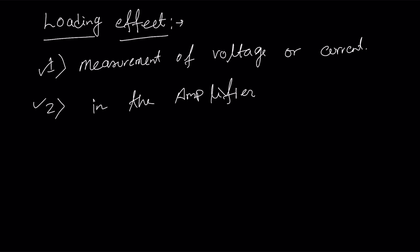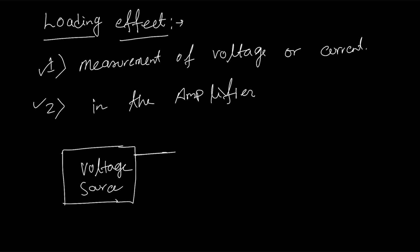I will show you the problem in each topic. The loading effect means whenever you connect a load in a particular circuit, at that time the circuit parameters like voltage or current will change. Suppose you have a practical voltage source with a positive terminal and a ground terminal, and you put the load here. When you connect the load, the voltage or current parameters will change. That's why we call it a loading effect — the voltage or current of the circuit is affected by the loading of the load resistance.